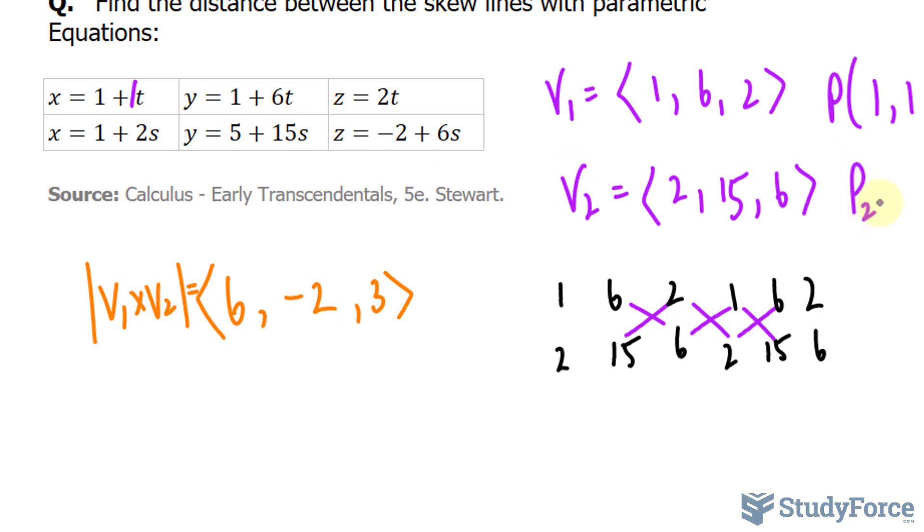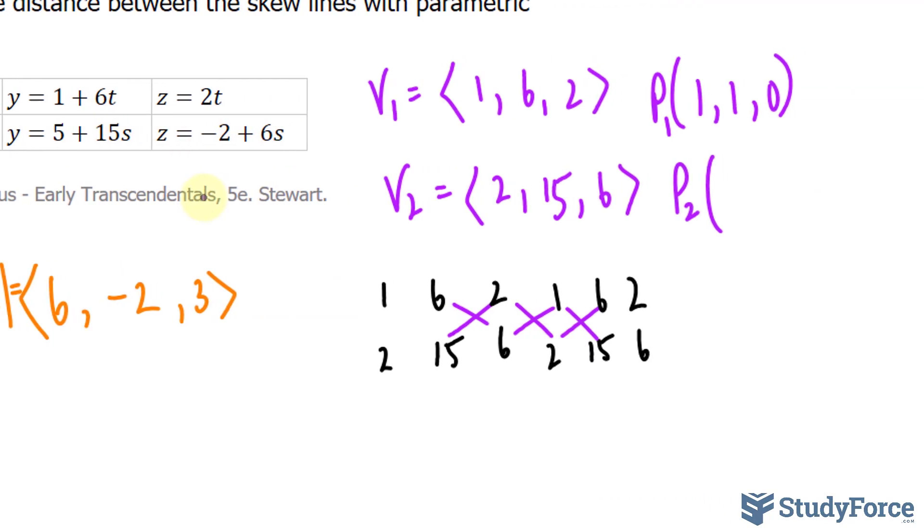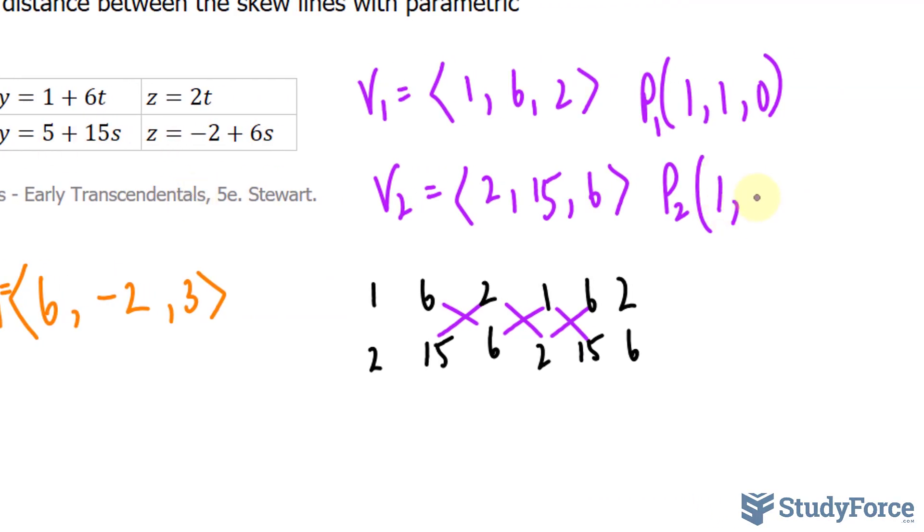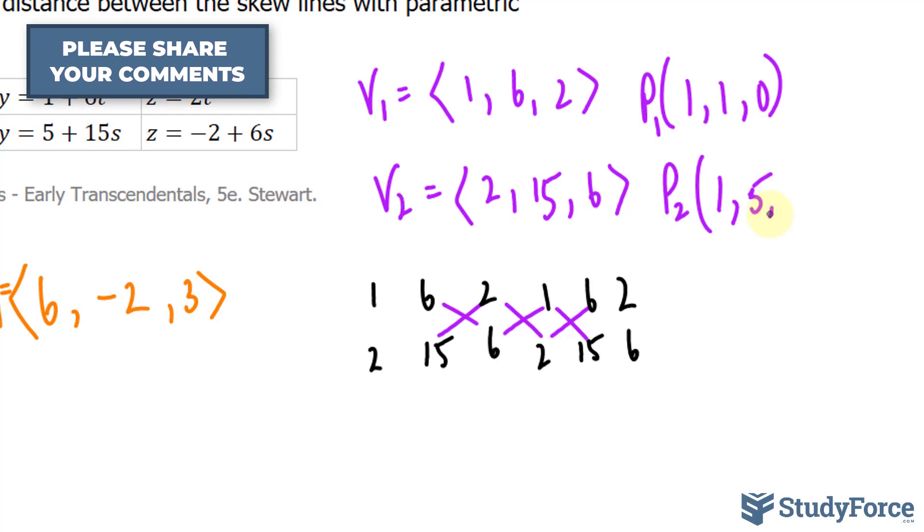And a point along this line, let's call it P2 and P1, setting that equal to 0, this one and this one, 1, 5, and negative 2. 1, 5, and negative 2.